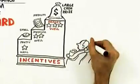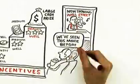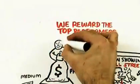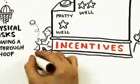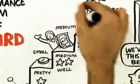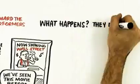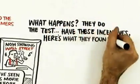We've seen this movie before. This is essentially a typical motivation scheme within organizations. We reward the very top performers. We ignore the low performers and the other folks kind of in the middle. So what happens? They do the test. They have these incentives. Here's what they found out.